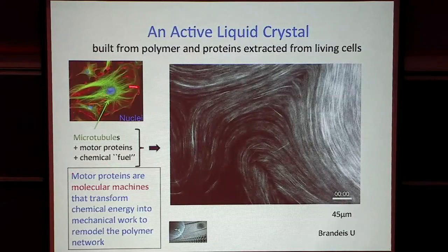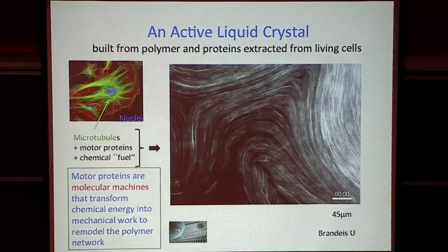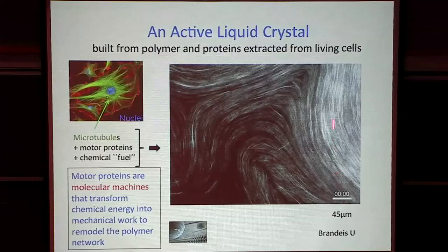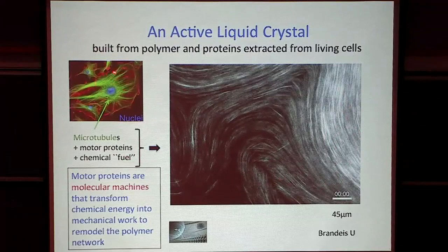A group at Brandeis extracted microtubules from cells and put them in suspension in water. What you see is an image of bundles of microtubules with a lot of nematic order — a lot of alignment — and some of the defects I was alluding to before. So this is a nematic, just like the logs, but made of polymers or proteins extracted from living cells.